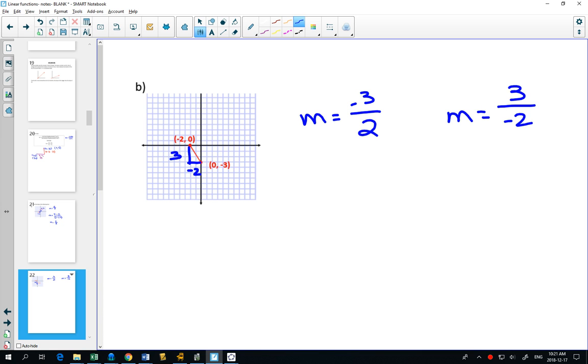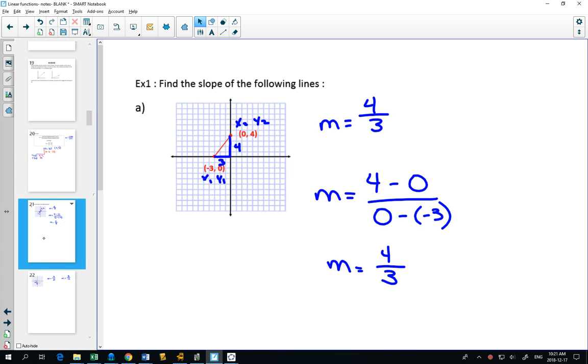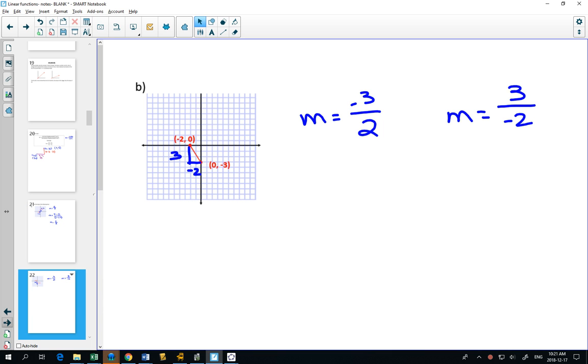One of the things that you're going to just know from this point forward is any slope, like our first example, that goes up from left to right, can you see that this slope is rising from left to right? That will always be a positive slope. And any slope that is going down from left to right is going to be a negative slope. So this one, my line is going down as I go from left to right. That will always be a negative slope.